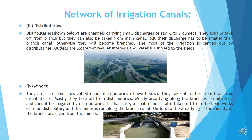Minors. They are also sometimes called minor distributories. They take off either from branch canals or distributories. Mostly they take off from the area lying along the branches, where the area is quite high and cannot be irrigated by distributories. In that case, a small minor is also taken off from the headworks of some distributory and this minor is run along the branch canal.